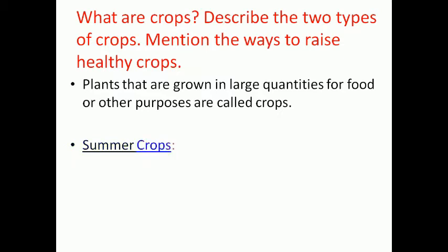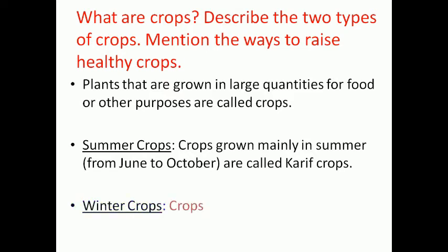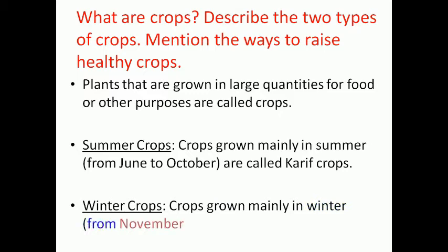There are two types of crops. Crops grown mainly in summer, from June to October, are called Kharif crops. Crops grown mainly in winter, from November to April, are called Rabi crops. These are the two types of crops.